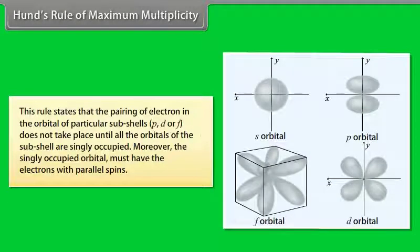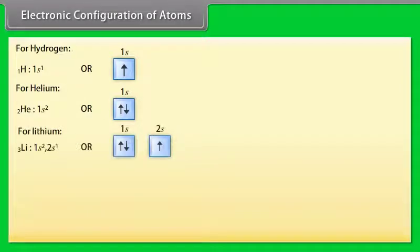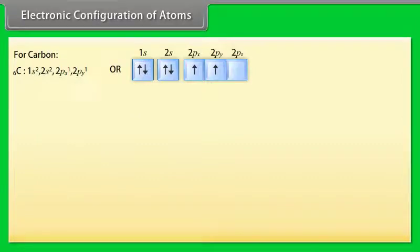Hund's Rule of Maximum Multiplicity states that the pairing of electrons in the orbitals of a particular subshell (p, d, or f) does not take place until all the orbitals of the subshell are singly occupied. Moreover, the singly occupied orbitals must have electrons with parallel spins. In order to represent the electron population of an orbital, the principal quantum number n is written before the orbital symbol, and the number of electrons is written as a superscript. For example, two electrons in the s orbital of the first energy level is written as 1s². Electronic configurations are given for hydrogen, helium, lithium, beryllium, boron, carbon, nitrogen, and oxygen.